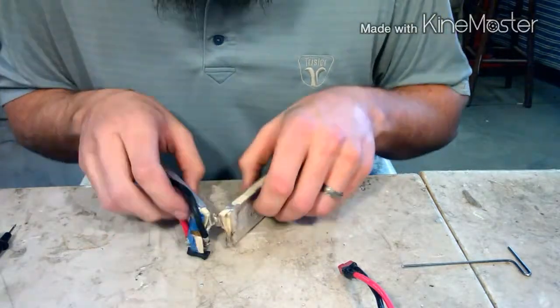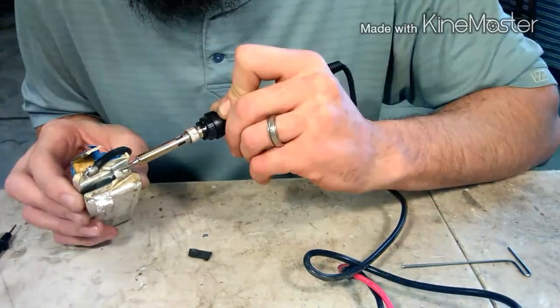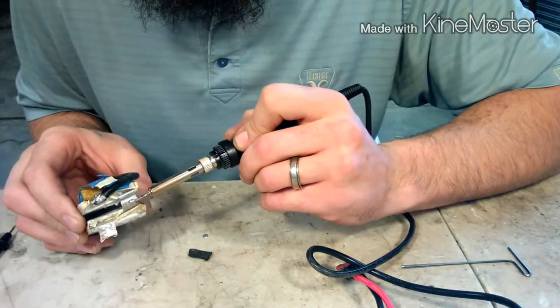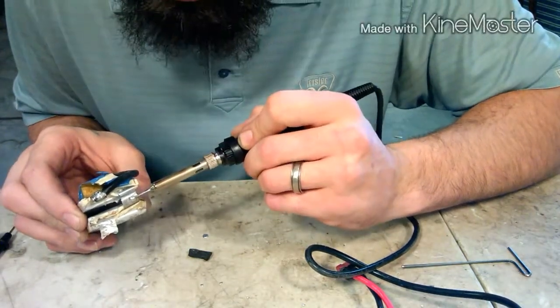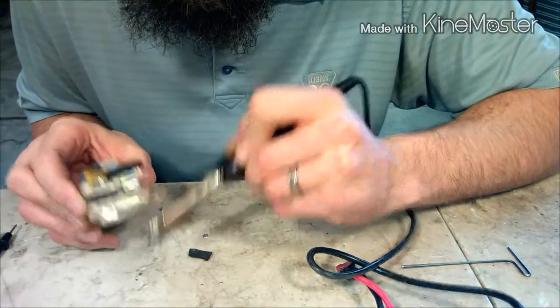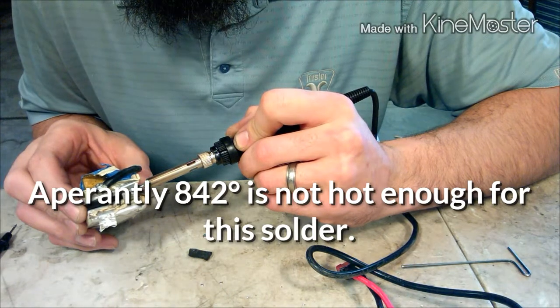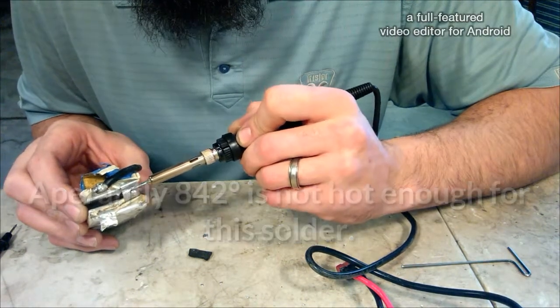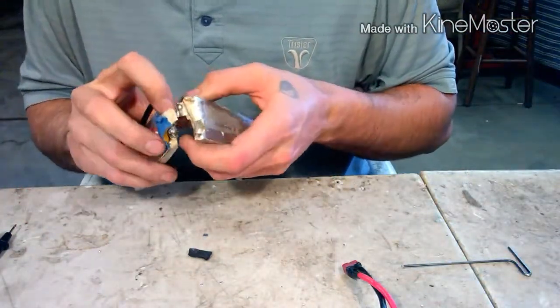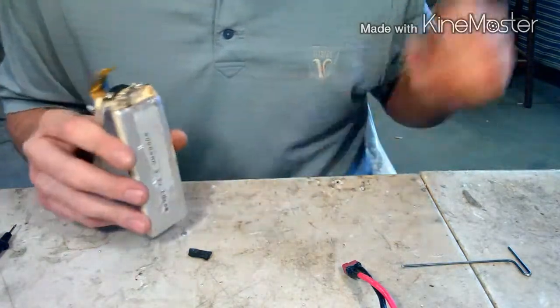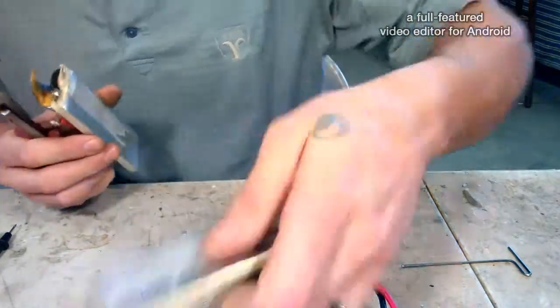Okay, so we'll go ahead and desolder this pack. If you ever deal with lipos you need a super hot iron. I'm running at 842 degrees right now and it's not even touching the surface on this thing. Well it looks like we're going to cut it. There we go, that works.